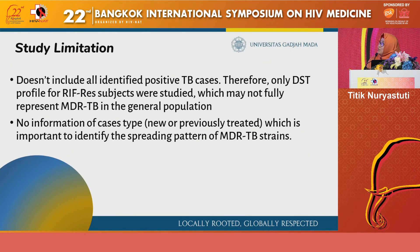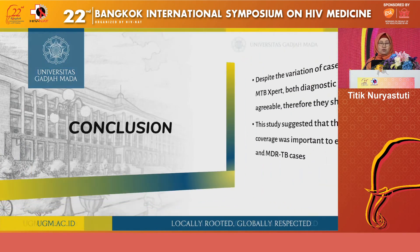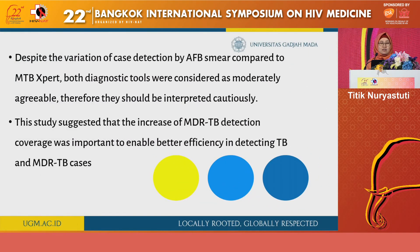There are study limitations: the study does not include all identified positive TB cases; only the DST profile for rifampicin-resistant subjects was studied, so it may not fully represent MDR-TB in the general population; and there is no information on case type — whether new or previously treated — which is important for identifying the spreading pattern of MDR-TB strains. In conclusion, despite the variation in case detection between AFB smear and GeneXpert MTB/RIF, both diagnostic tools showed moderate agreement and should be interpreted cautiously. The study suggests that increasing MDR-TB detection coverage is important to enable better efficiency in detecting TB and MDR-TB cases.